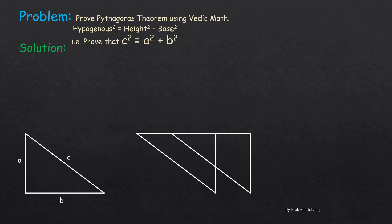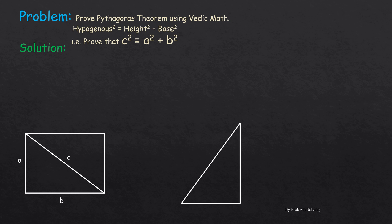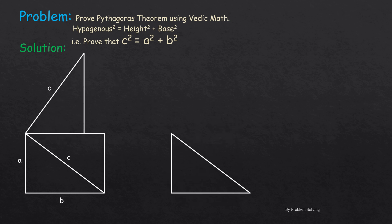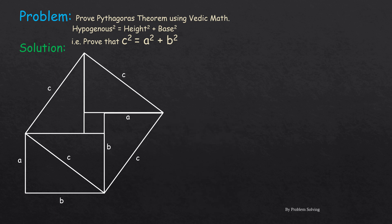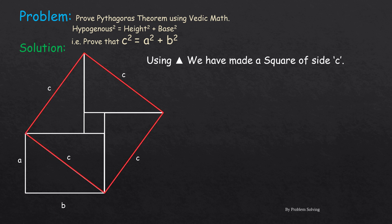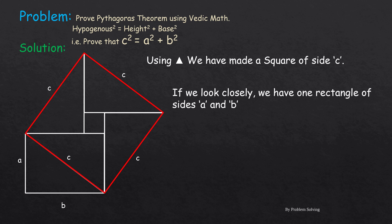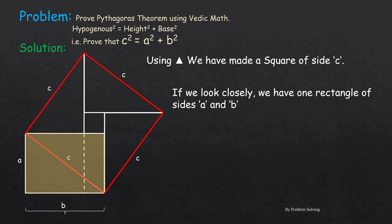To do this, we're basically going to be making a square of side c — from here to here, here to here. So you can see that I have made a square of side c. This is my square of side c with a small square in the middle. If we look closely, we have one rectangle of sides a and b, which is the brown portion that has been highlighted, and we have a square of side a, which is the green portion.